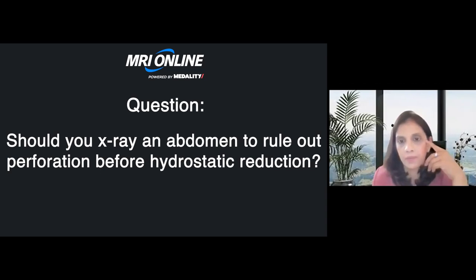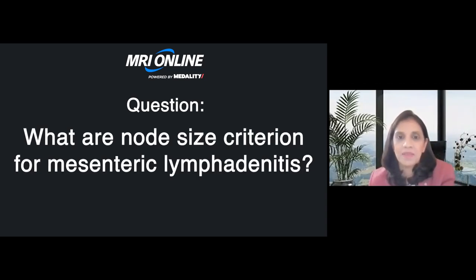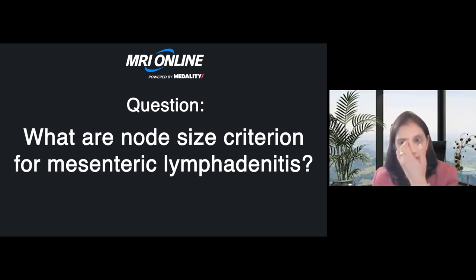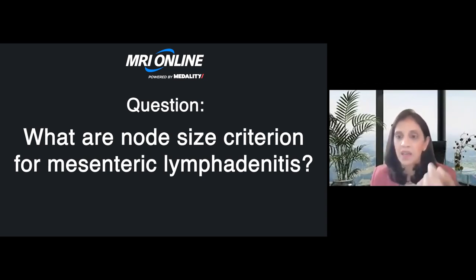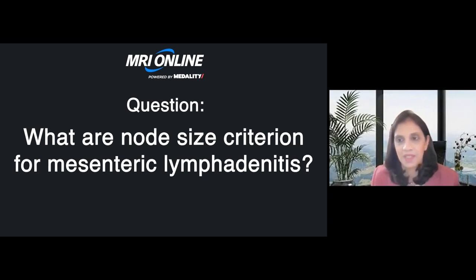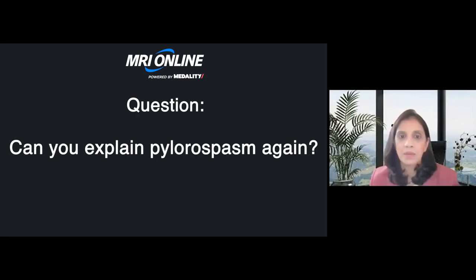What is the node size criteria for mesenteric lymphadenitis? Lymph nodes can be as small as three, four, five, or six millimeters. We measure the short-axis diameter (SAD) and report them. There is no specific size criteria in the literature. Even the tiniest lymph nodes or hypertrophic Peyer's patches can become a lead point. Document what you see — whether there are clusters or bunches — to give the physician an idea of what's going on.